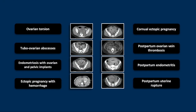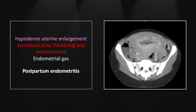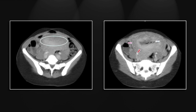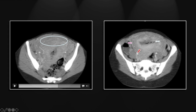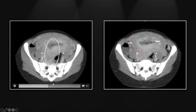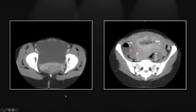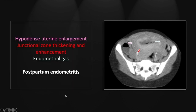Our next case is a postpartum endometritis. There is pronounced enlargement of the uterus, which would be expected in a postpartum state, but also note this pronounced enhancement and thickening of the junctional zone, as well as this fairly large collection of endometrial gas, which is not typically going to be present very long after birth. There is a nice view of that endometrial cavity, full of gas and slightly hyperdense. That was a postpartum endometritis.